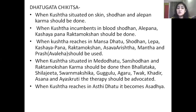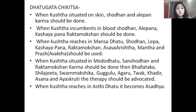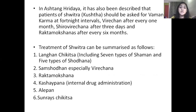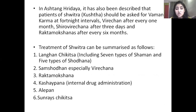Now, Dhatvanusara Chikitsa: when Kushtha is situated on skin, Shodhan and Alepan Karma should be done. If it is incumbent in blood, then Shodhan, Alepan, Kashayapan and Raktamokshana should be done. When Kushtha reaches in Mamsadhatu, then Shodhan, Lepan, Kashayapan, Raktamokshana, Asavarishta, Mantha and Prasha should be used. When Kushtha is situated in Medodhatu, Sanshodhan and Raktamokshana Karma should be done, and Dhallatak, Shilajit, Karnamakshi, Guggul, Aguru, Paka, Khadir, Asana and Ayaskriti etc. should be advocated. When Kushtha reaches in Asthidhatu, it becomes Asadhya. In Ashtanga Sangraha, it has been described that the patient of Shwitra should be given Virechana at fortnight intervals, Virechana after every one month, Shiro Virechana after three days and Raktamokshana after every six months.